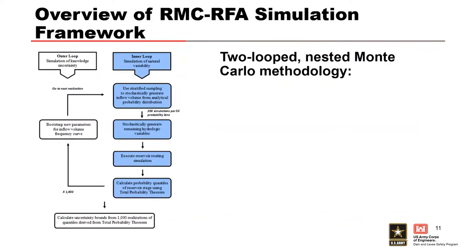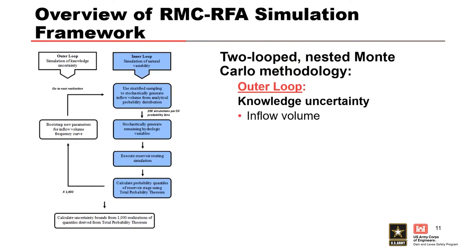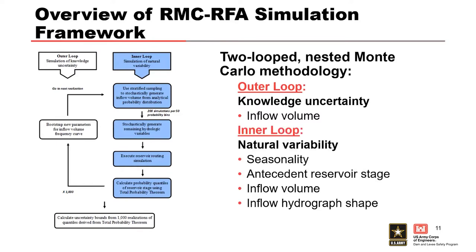In order to construct uncertainty bounds for reservoir stage frequency estimates, RFA employs a two-looped nested Monte Carlo framework. This strategy of having two loops allows us to separate natural and knowledge uncertainty so that we can calculate and portray the magnitude of uncertainty. This allows us to decide on investments, such as whether we want to invest in reducing knowledge uncertainty to get a better decision. The outer loop simulates the knowledge uncertainty in the inflow volume frequency distribution, while the inner loop addresses the natural variability of the reservoir stage by simulating many thousands of flood events.